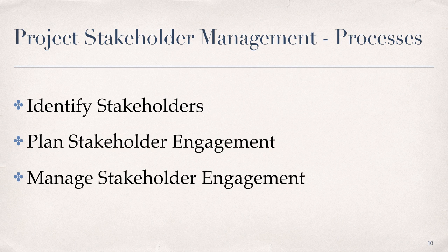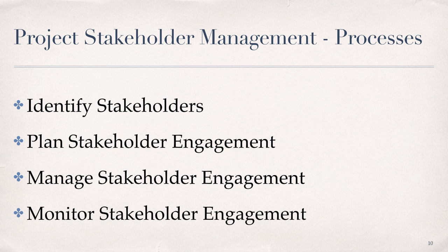The third process is manage stakeholder engagement — the process of communicating and working with stakeholders to meet their needs and expectations, to address any issues or problems, and maintain engagement during each product development lifecycle phase or sprint. This process aligns with the executing process group in the PMBOK. The fourth process is monitor stakeholder engagement, which monitors stakeholder relationships to identify and address any gaps in the engagement strategies and plans. This process supports project communications management and is aligned with the monitoring and controlling process group in the PMBOK. The project stakeholder management processes are included in every project lifecycle phase, covering all of the project management process groups in the PMBOK.